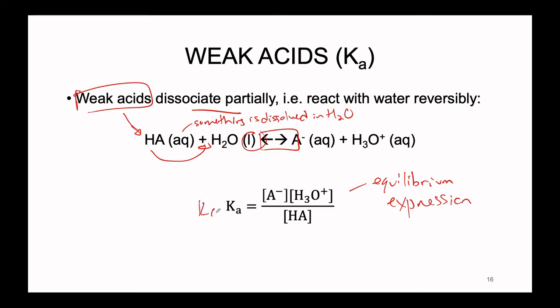Since this reaction is reversible, we can write an equilibrium expression to represent the balance of products to reactants. The special Kc we're going to work with is known as Ka — the equilibrium constant for a weak acid in solution. Just like the Ksp or Kw case, there's no special math; it's just a label change. Ka represents the equilibrium constant expression for a weak acid: the products A- and H3O+ are in the numerator, and the weak acid HA is the only reactant included in the denominator since it's the only aqueous-phase reactant.